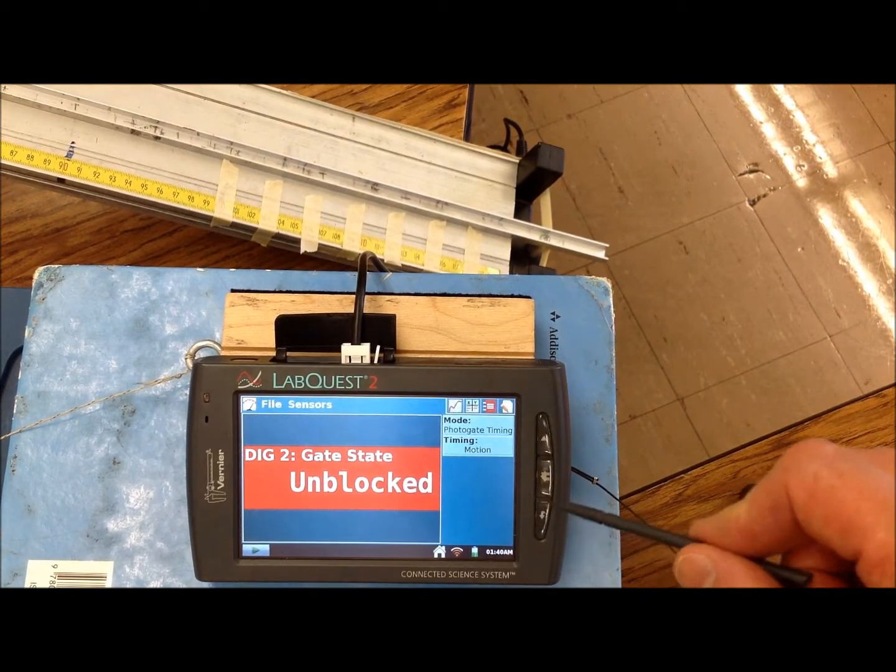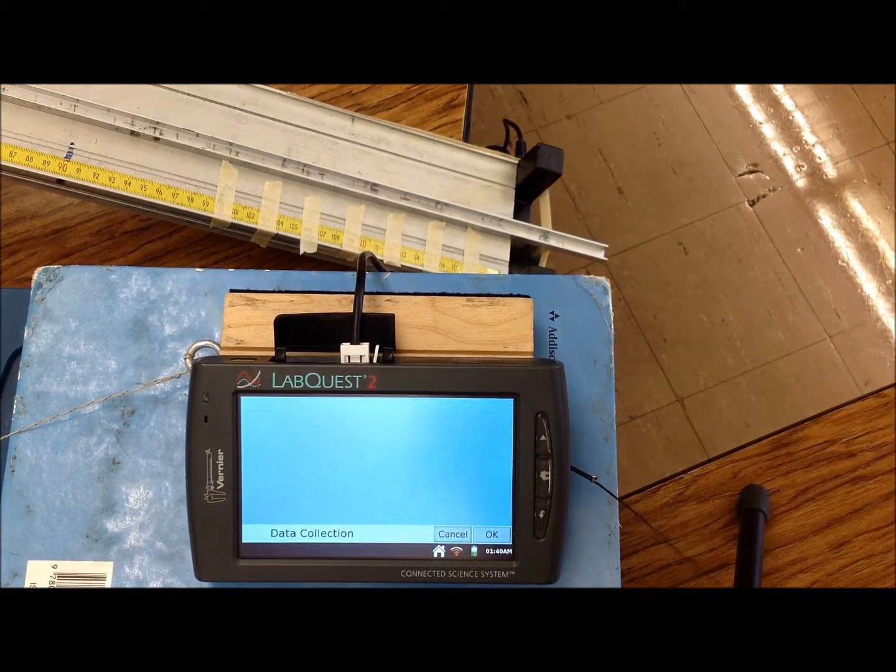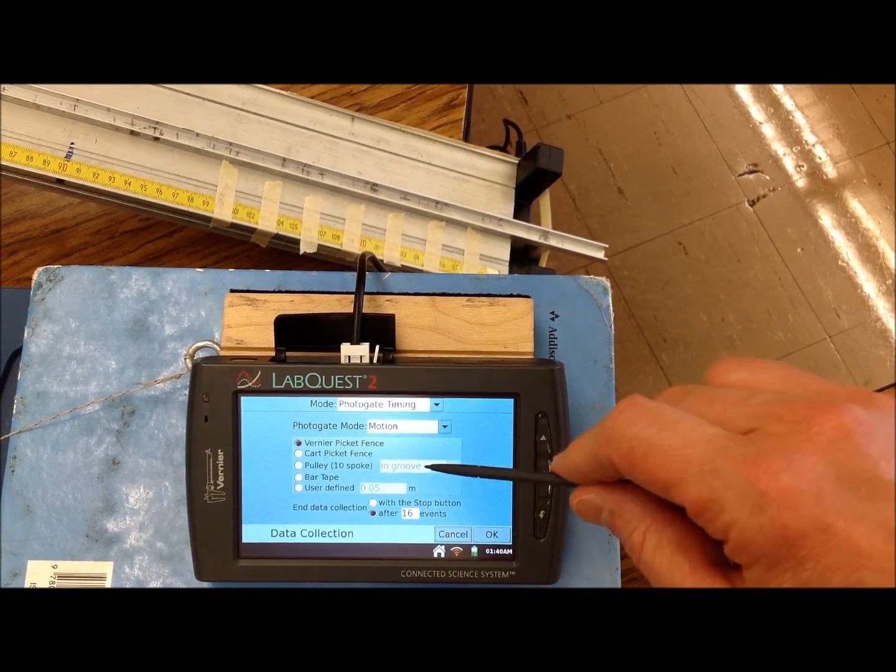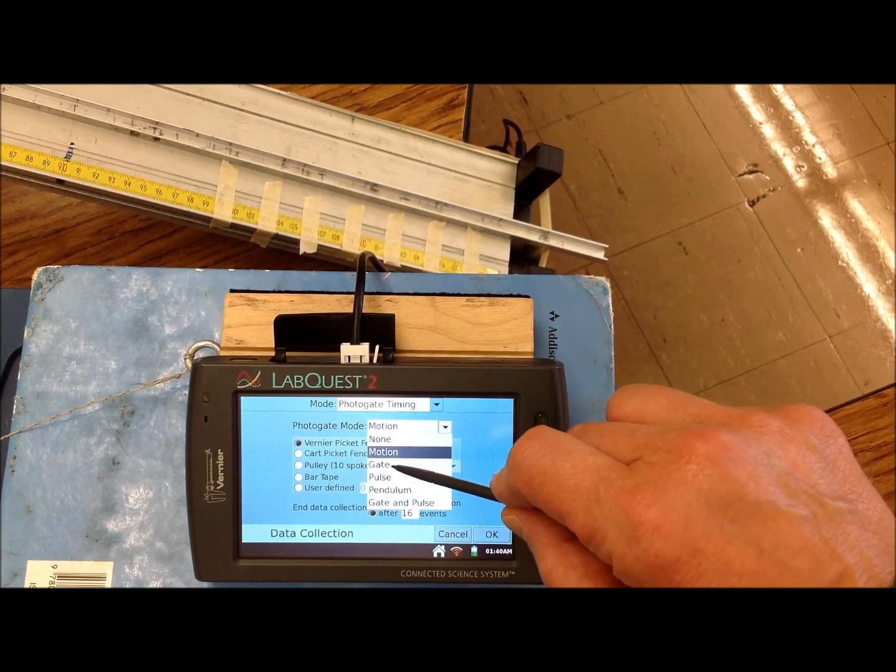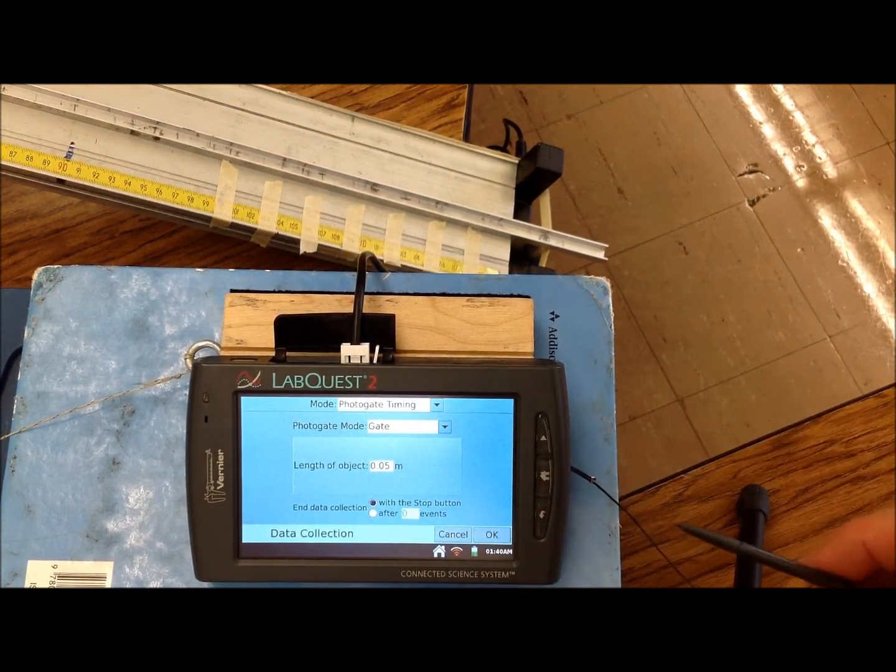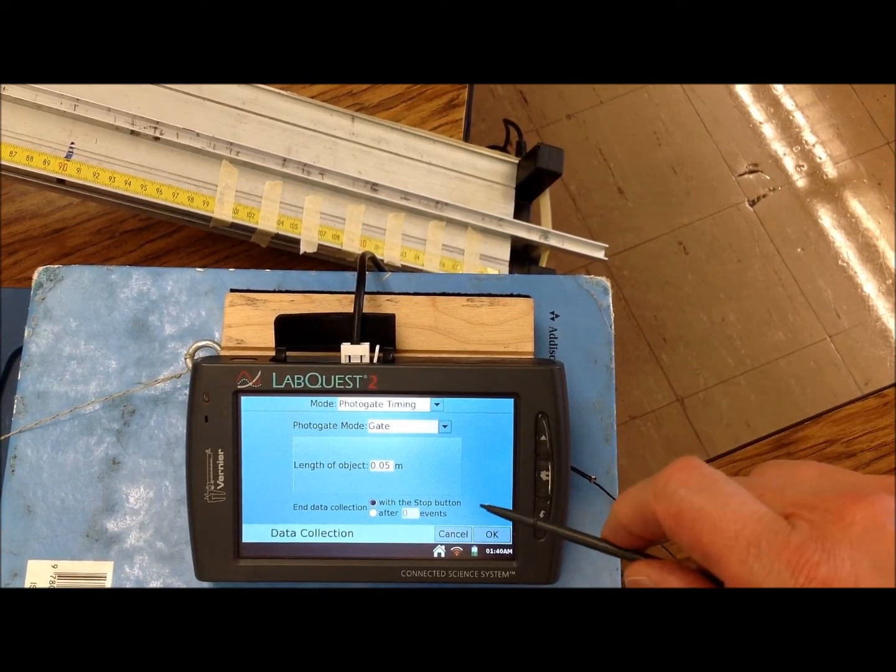The timing will probably say motion when it comes on. That's not going to work. So you need to click on motion, then you click where it says motion. We need to change that to gate, because we're using the photogate. Now every time you restart it, it defaults to motion, so you have to pay attention to that.